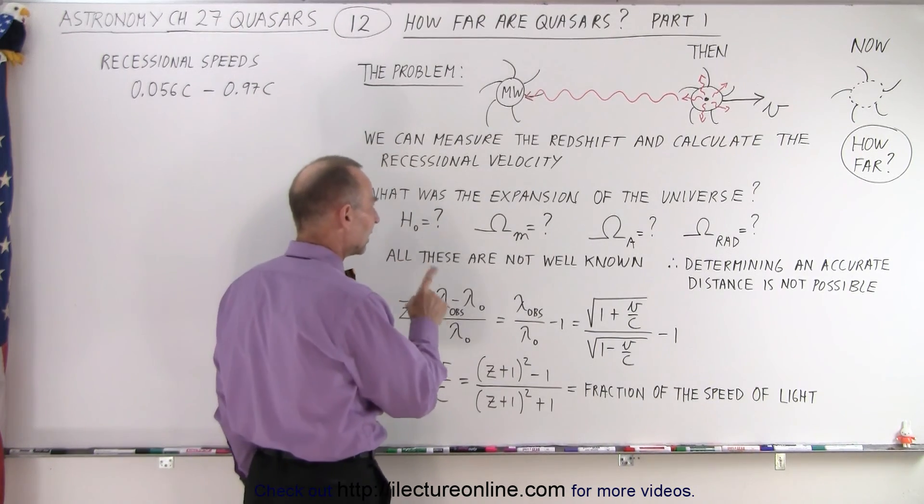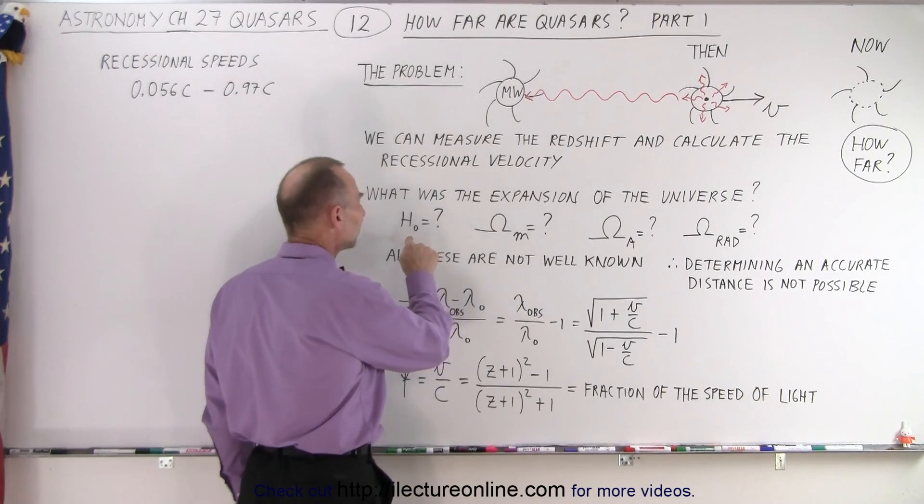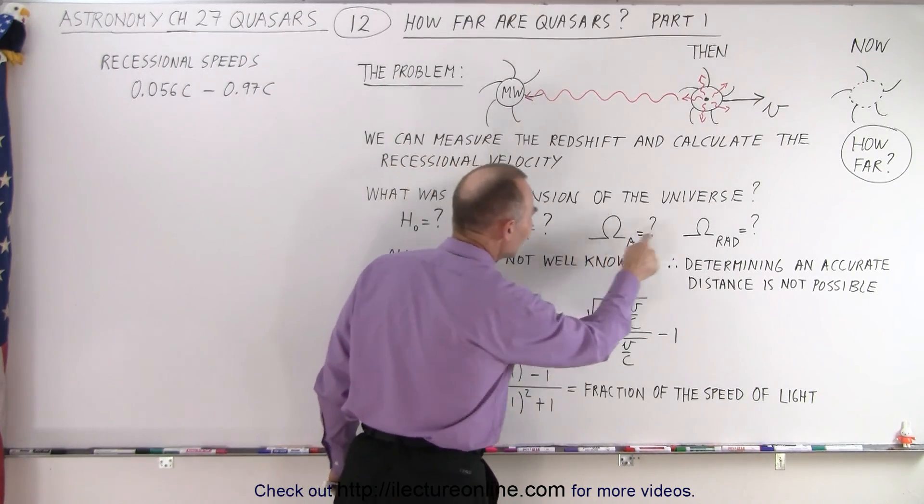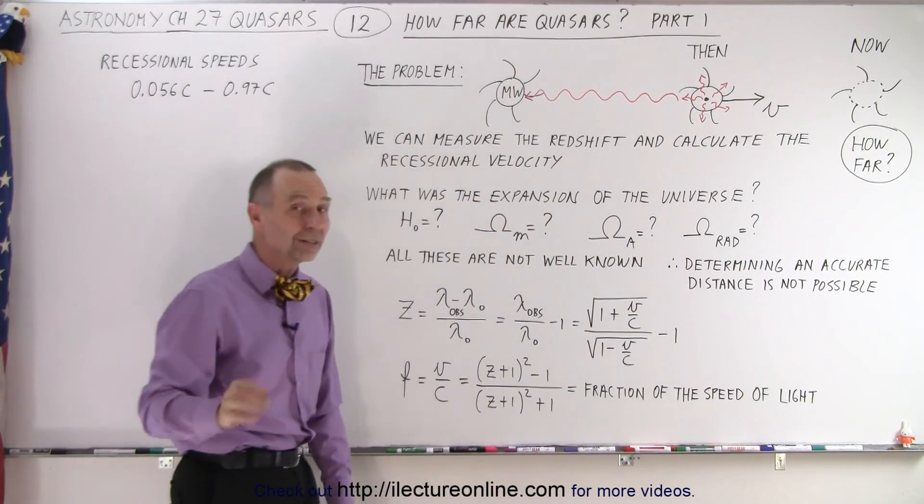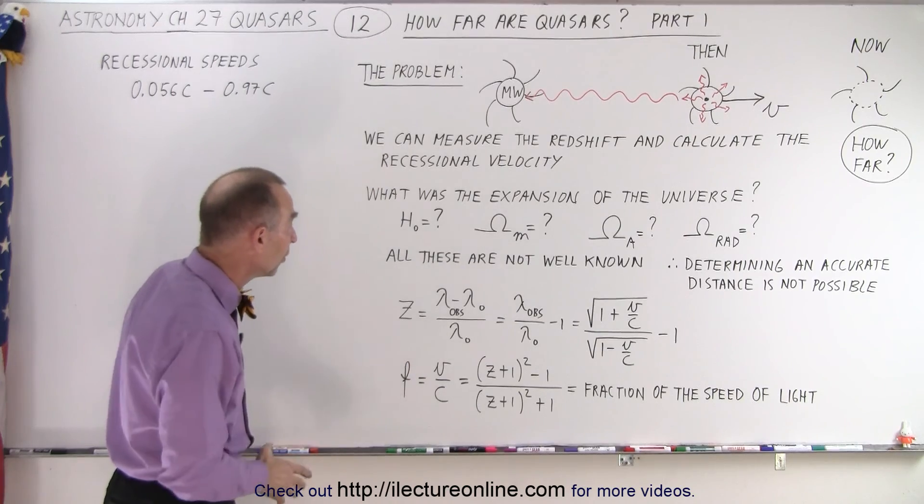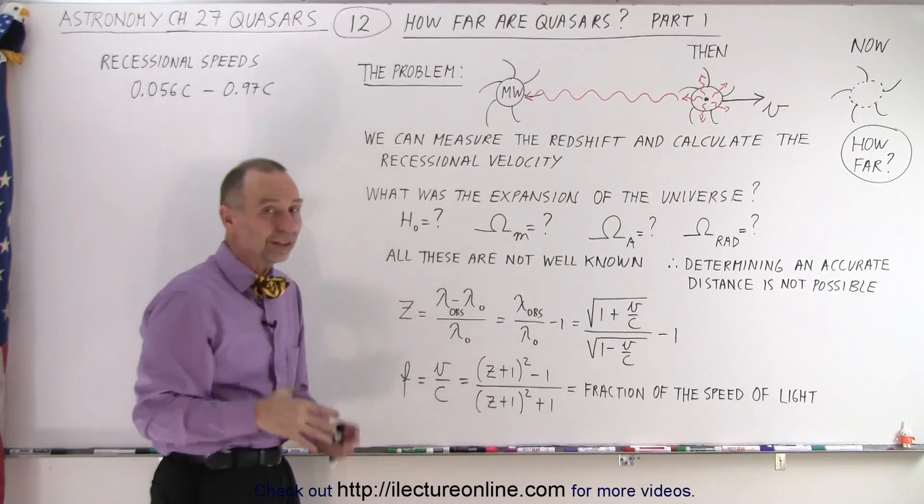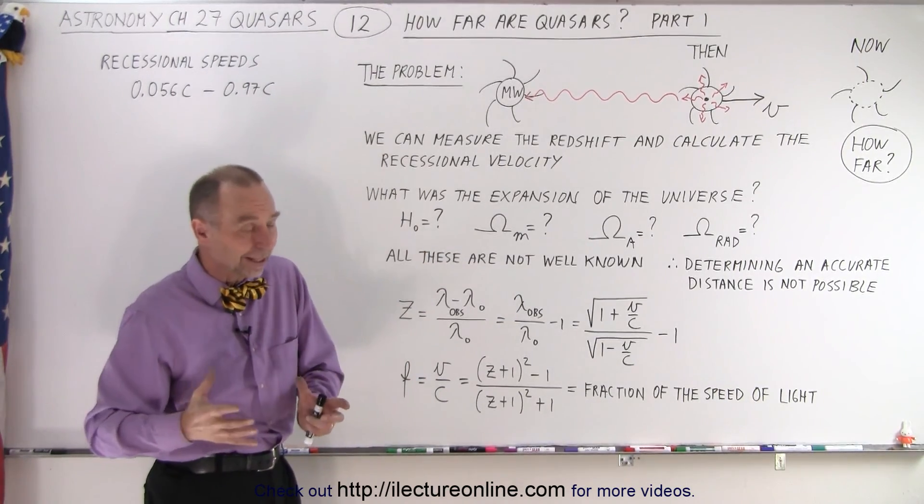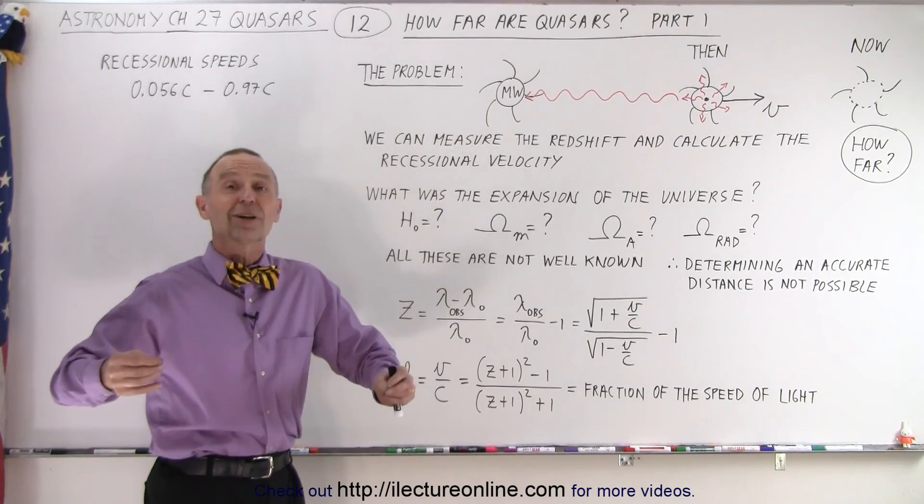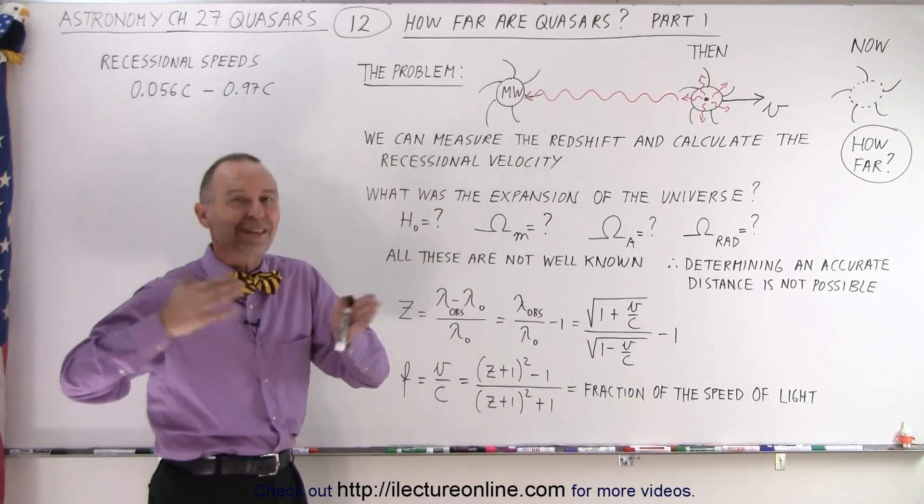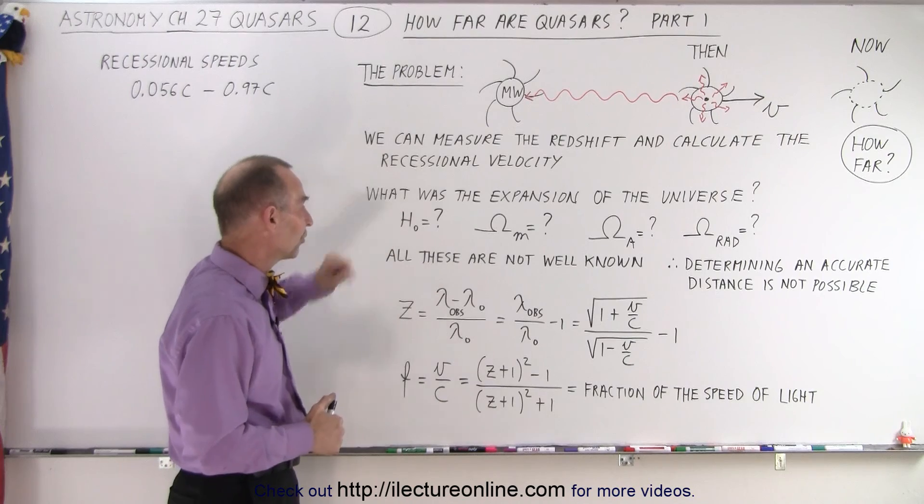In order to calculate the distance accurately, we need to have these 1, 2, 3, 4 constants relatively accurately. What are those constants? Well, this is the Hubble constant, and you already know the Hubble constant is still not a true constant. We still don't know what the exact value is, so there's a certain amount of uncertainty there.